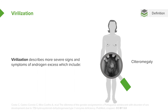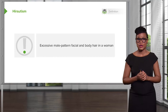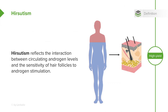Hirsutism is different. There is an excessive male pattern facial and body hair distribution in women, which is abnormal. Remember that hirsutism reflects the interaction between circulating androgen levels and the sensitivity of hair follicles to androgen stimulation. This suggests that different women may be stimulated differently at the level of the hair follicle — this is a high-yield fact often quizzed on exams.